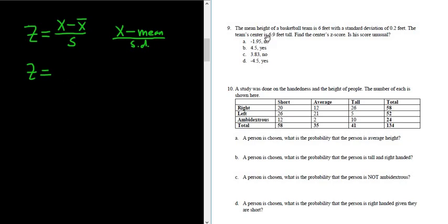So in this problem, x is our number. So it's the team's center, it's his height. So the team's center is 6.9 feet, so 6.9 minus x bar is the mean. So the mean height of a basketball team is 6 feet, so that's going to be 6. And the standard deviation is really small, it's 0.2 feet.